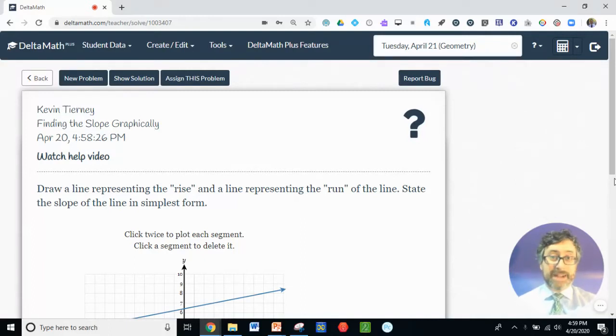Find the slope graphically. Today we're going to look at lines graphed on coordinate grids and use those to find the slope of the line.